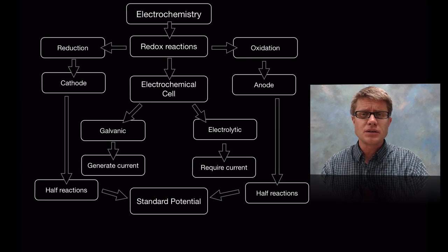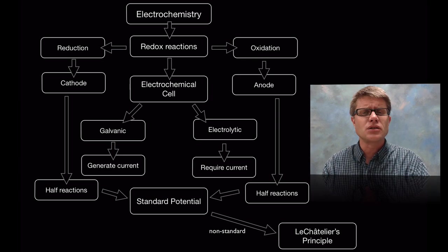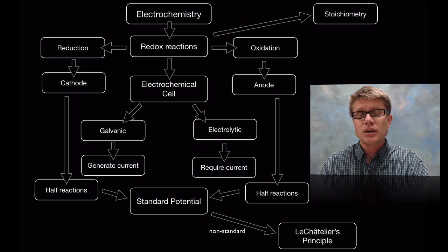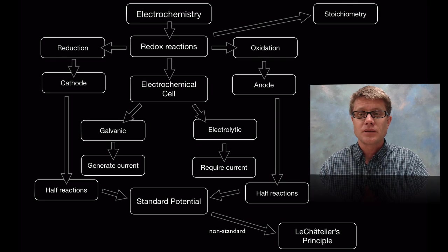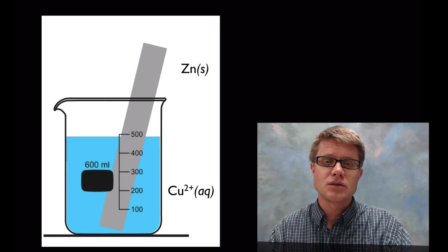And so if we have variance from that then we could use Le Chatelier's principle to qualitatively measure what's going on. We can also measure stoichiometry in a cell. So we could use Faraday's laws to qualitatively measure that as well. And so let's start with a simple demonstration.